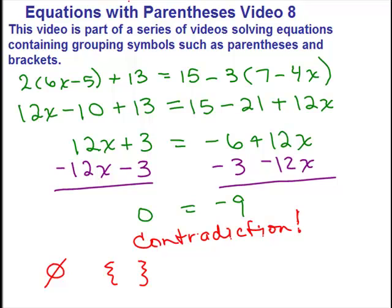Now some people might have noticed at this step right here that there was a contradiction. It says 12X plus 3 is really the same thing as 12X minus 6. That doesn't make sense that if you take something and add 3 to it, you would have the same thing as if you just subtracted 6 from it. So some people might have noticed we've got a contradiction right there.